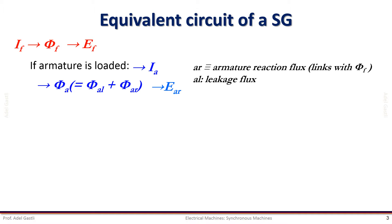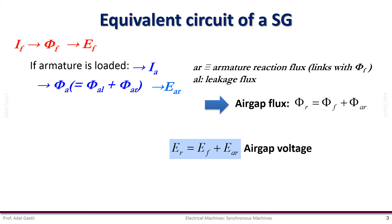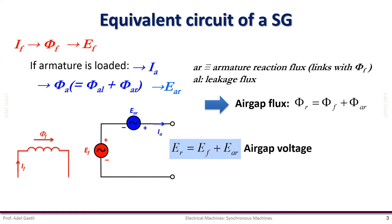The armature reaction flux induces a back EMF EAR in the armature. Since the resultant flux in the air gap is the sum of the field flux and armature reaction flux, the resultant air gap voltage ER is equal to EF plus EAR. Thus the equivalent circuit of the synchronous generator can be drawn as shown here. Notice that the open circuit armature voltage is different from the loaded armature voltage because of the armature reaction effect, and that the armature reaction voltage opposes the induced field voltage.